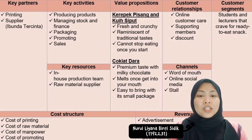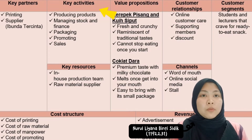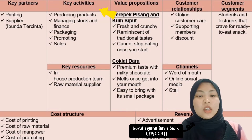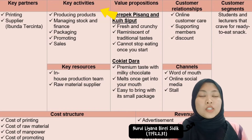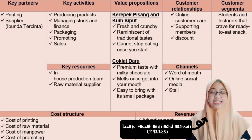Key activities. The key activities we do in our business are: first, producing products such as chocolate darah; second, managing store and finance; third, packaging; fourth, promoting; and fifth, sales through direct selling and indirect selling such as online social media.